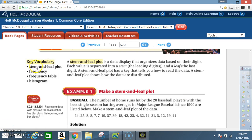Key vocabulary: stem and leaf plot, frequency, frequency table, histogram. A stem and leaf plot is a data display that organizes data based on their digits. Each value is separated into a stem, the leading digits, and a leaf, the last digit. A stem and leaf plot has a key that tells you how to read the data. It shows how the data are distributed.